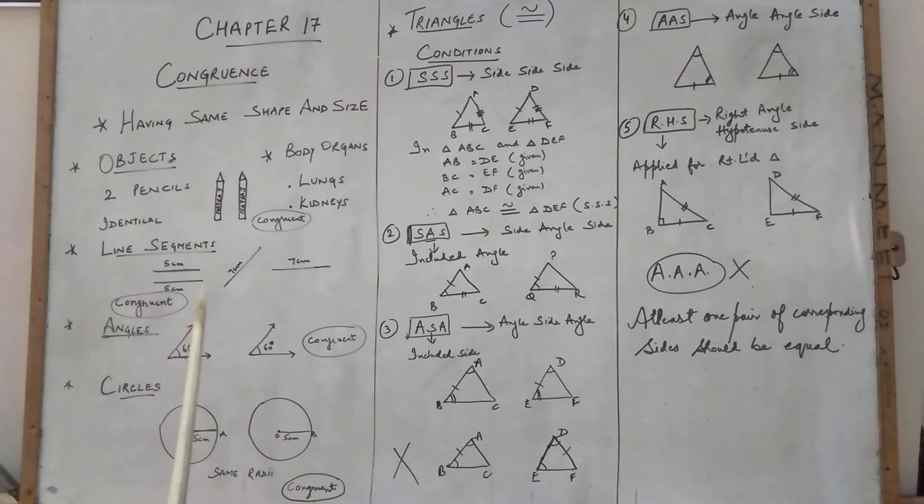It is not that you have to take both lines like parallel lines. We can take in this way also. This is also 7 cm, 7 cm, both are identical, both are congruent of same size. Now we will come to the angles.